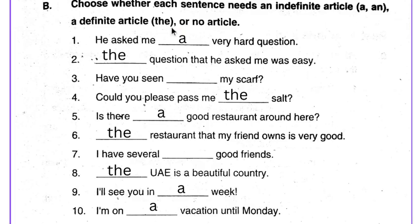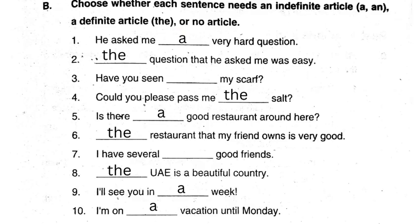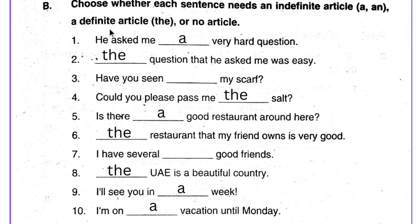Choose whether the sentence needs an indefinite article A, a definite article The, or no article. First: 'He asked me a very hard question.' Second: 'The question that he asked me was easy.' Third: 'Have you seen my scarf?' — over here no article is needed.